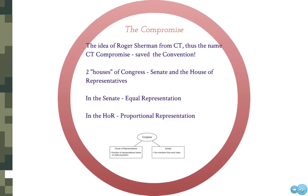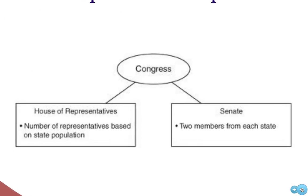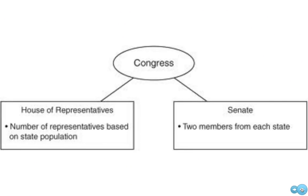The idea was proposed by Roger Sherman of Connecticut, which is why it's called the Connecticut Compromise and why he is so famous for his role. His idea was that Congress would be divided into two groups called houses. In one house, called the Senate, representation would be based on equal representation — every state would send two people, so Delaware would have the same say as Virginia.